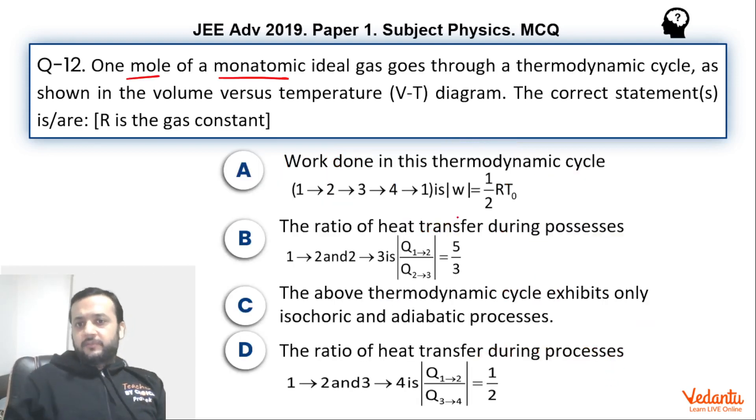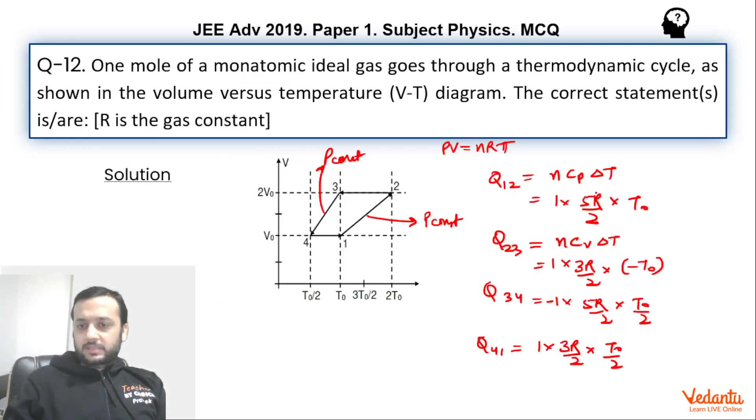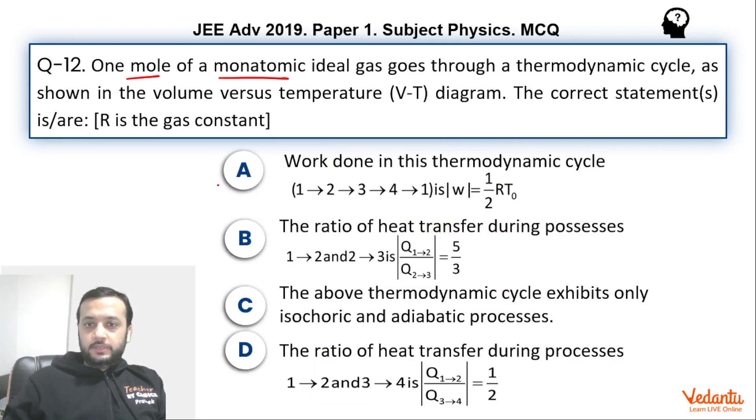Now if you go back to options, work done in this cycle—for any cyclic process, the total sum of Q is also W. So if you add it up, let us quickly add it up. 5R by 2 T0 and this is 5R by 2 T0 by 2. This is 3R by 2 T0. If you add Q1 plus Q2 plus Q3 plus Q4, this will become 5R by 2 T0 and this is 5R by 2 T0 by 2, minus 3R by 2 T0 by 2. So this is 5RT0 minus 3RT0, that means 2RT0 by 4, that means this is RT0 by 2. So option A is correct.